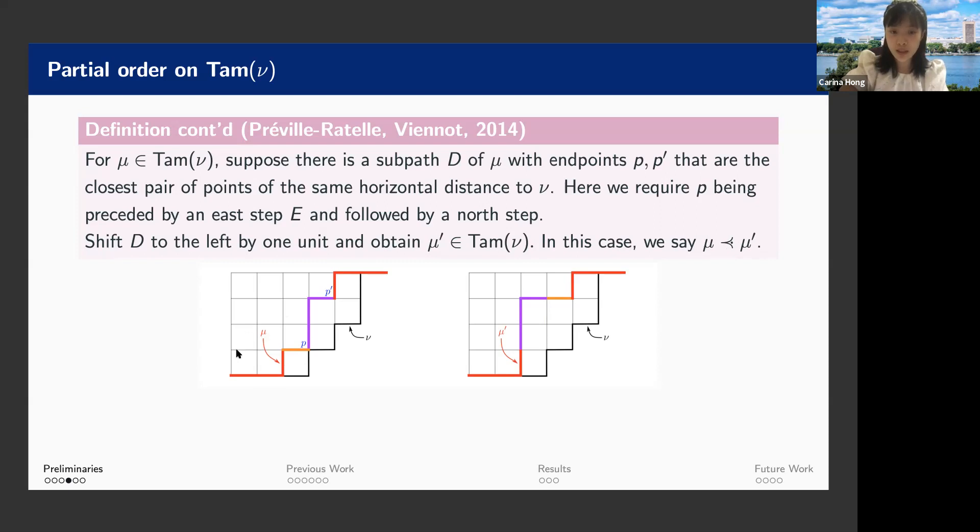So what is the partial order? It's a little bit tricky to define. Basically, we require a very special sub path D, this purple segment of an element, a lattice path mu, and then we shift this path to the left by one unit. And then we obtain a different path that is still weakly above this bounding path. So it is still in this Tam nu. And then in this case, we say that this path before the path was shifted to the left, the thing is covered by the same we obtain after the shift. And we of course require a lot of properties on this D. For example, it must be preceded by a step to the east and the first step must be to the north.